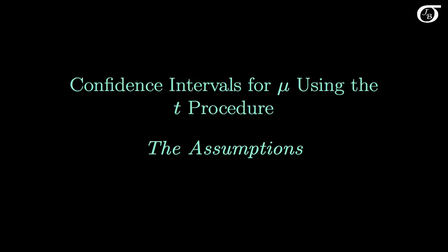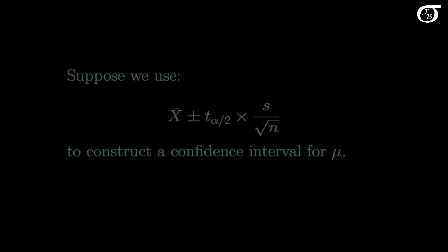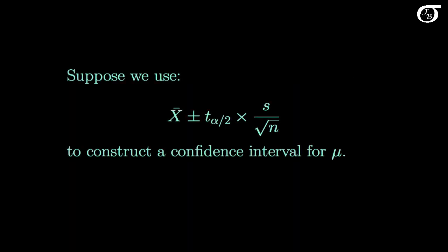Let's take a look at the assumptions when constructing confidence intervals for the population mean mu using the t procedure. Suppose we use this confidence interval formula to construct a confidence interval for the population mean mu.